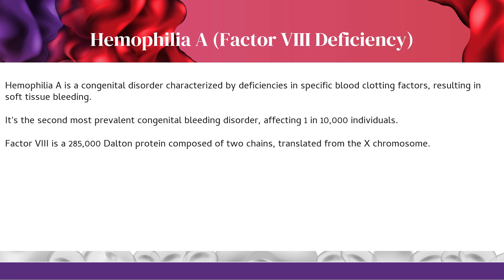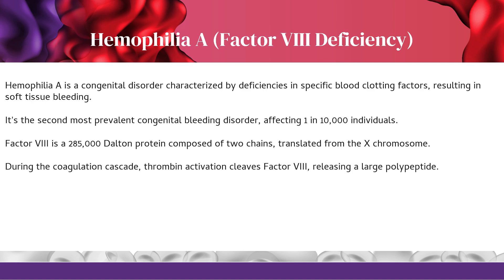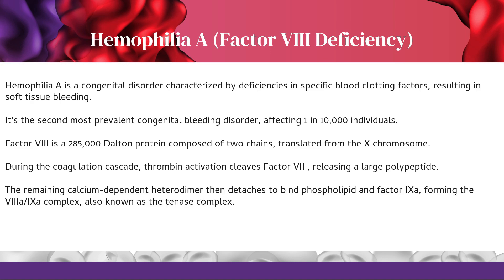Let's talk about Factor 8, the key player in hemophilia A. This protein, with a 285,000 Dalton structure, is composed of two chains translated from the X chromosome. During the coagulation cascade, thrombin activation cleaves Factor 8, releasing a large polypeptide. The remaining calcium-dependent heterodimer then detaches to bind phospholipid and Factor 9a, forming the 8a/9a complex, also known as the 10a-se complex, which is crucial for efficient thrombin production.